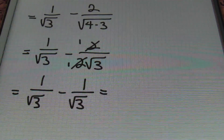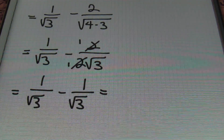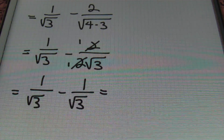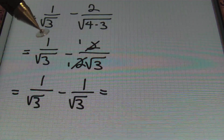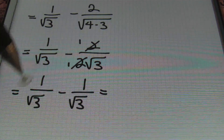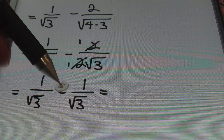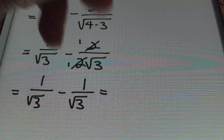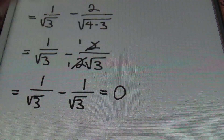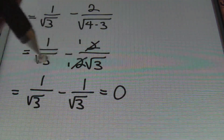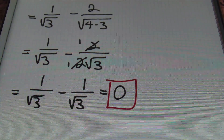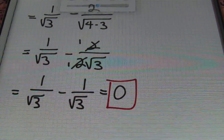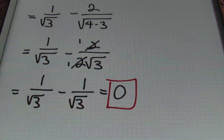The numerator and denominator both have a 2, so that simplifies to 1 over the square root of 3 minus 1 over the square root of 3. Anytime you have additive inverses, the answer is 0. So 1 over the square root of 3 minus 1 over the square root of 3 equals 0 — anything minus itself is 0.